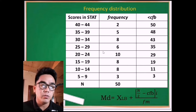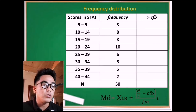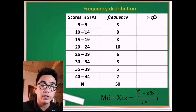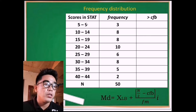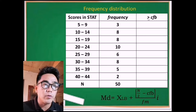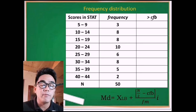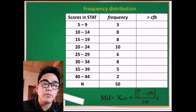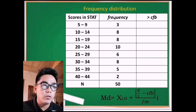Now, what about ascending order? In this frequency distribution, as you can see on the first row, 5–9, 10–14 are in increasing order, so it is ascending order. If it is ascending order, we're going to use the greater-than symbol of cumulative frequency before the median class. So how do you properly fill in all the rows?